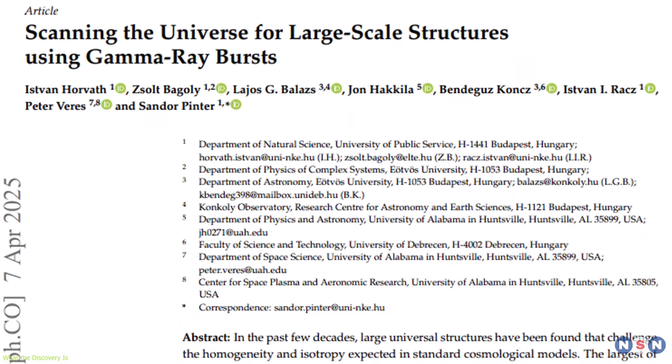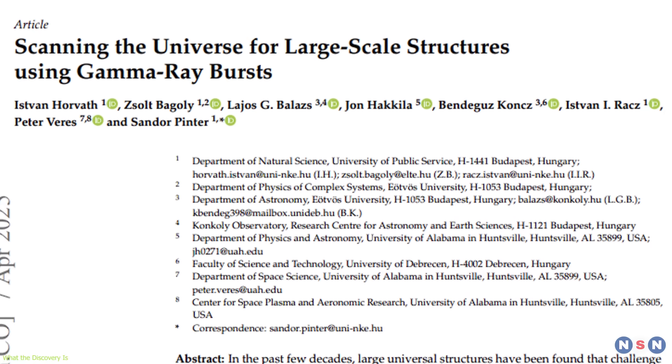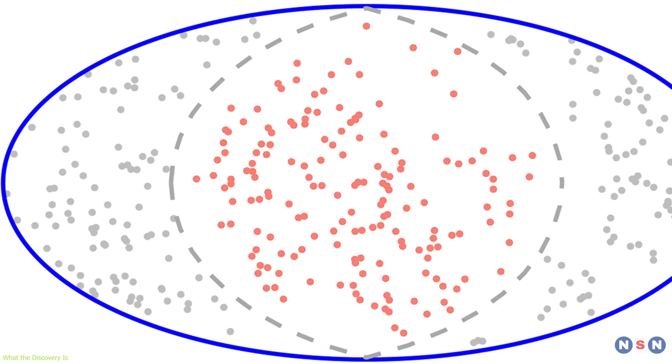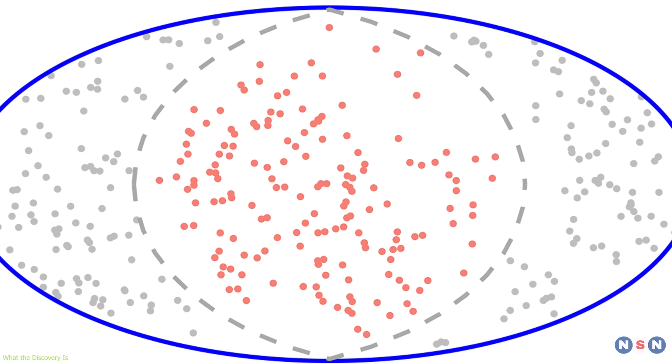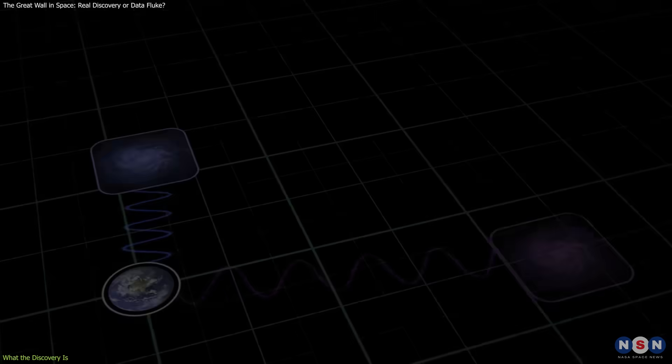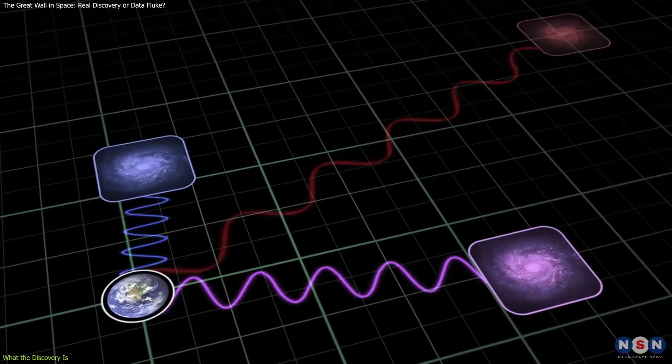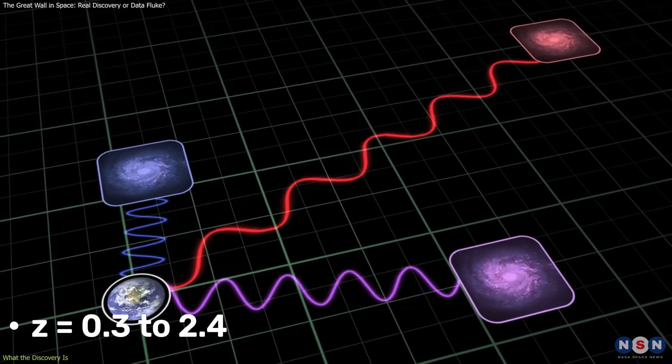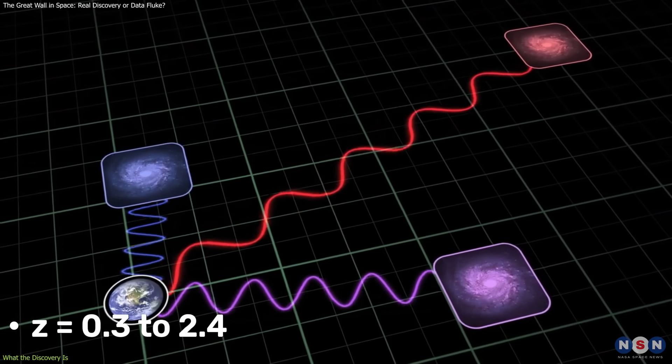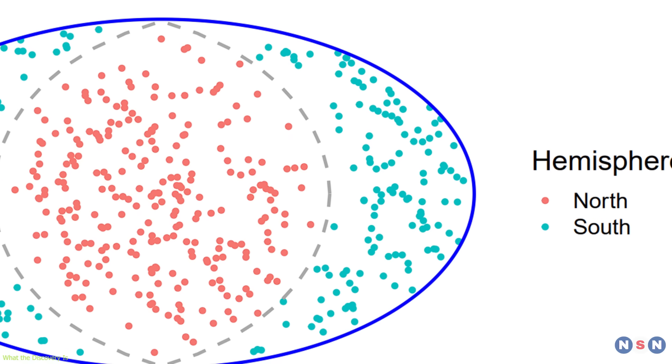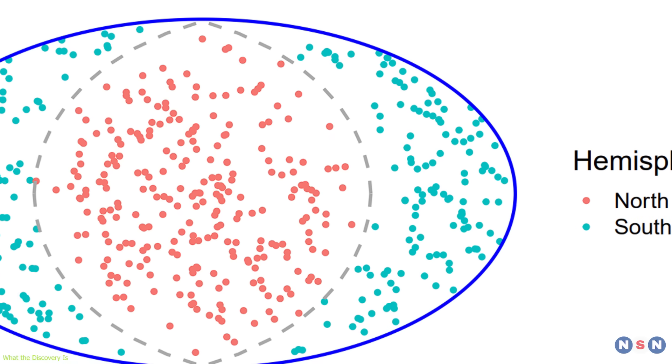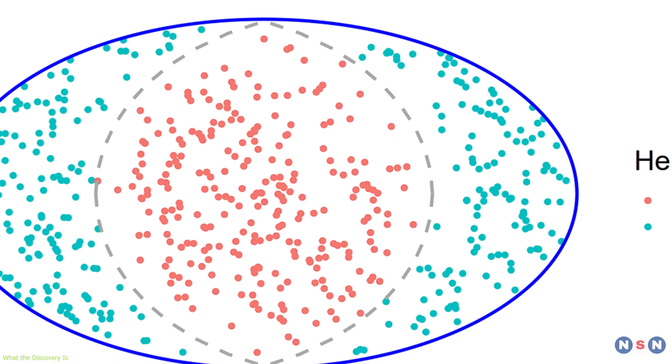More recently, a follow-up study incorporating 542 GRBs expanded that estimate to up to 15 billion light-years, spanning redshifts from approximately z equals 0.3 to 2.4. The updated data also suggests that portions of the structure are much closer than previously believed.